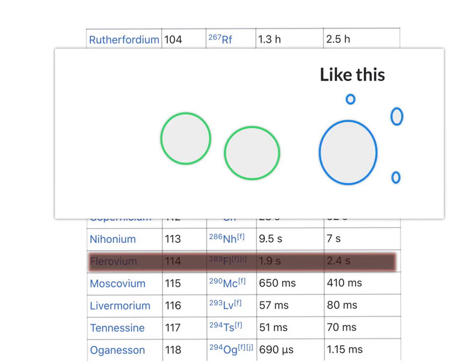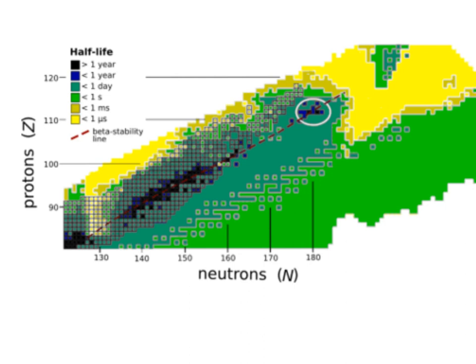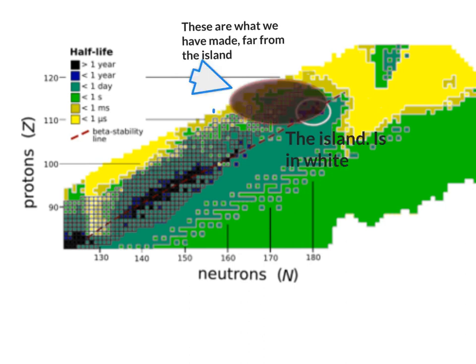Beyond this, the already synthesized isotopes of element 114 and the surrounding elements are not the isotopes predicted to be extremely stable under the atomic models used.